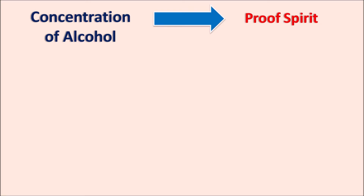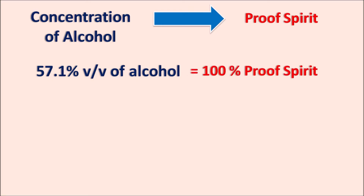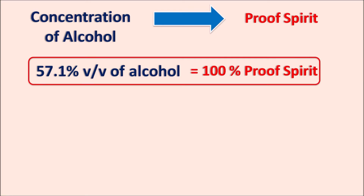According to the British Pharmacopoeia, 57.1% volume by volume of alcohol is considered as 100% proof spirit or 100 degrees proof spirit. Using this equation we can calculate the proof spirit of a given alcoholic preparation. That means 100 ml of the solution contains 57.1 ml of alcohol, which is equal to 100% proof spirit.